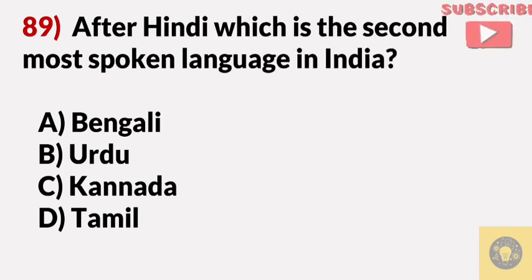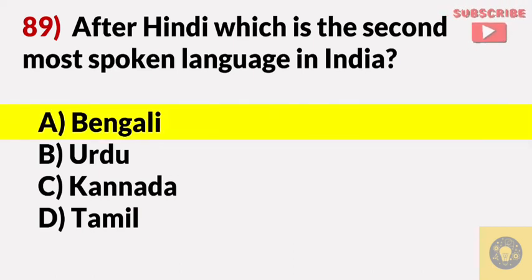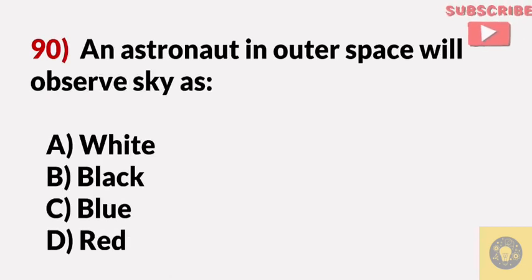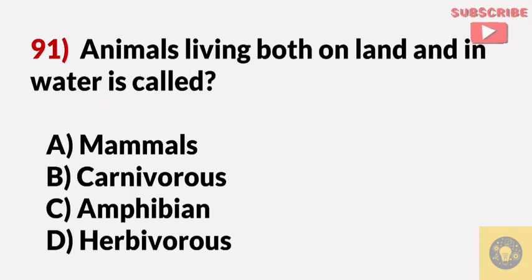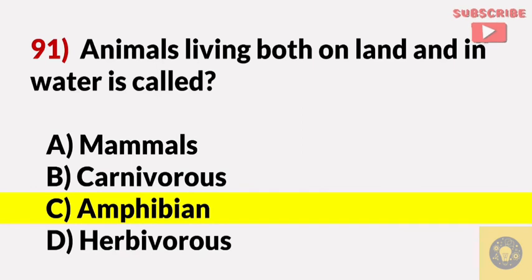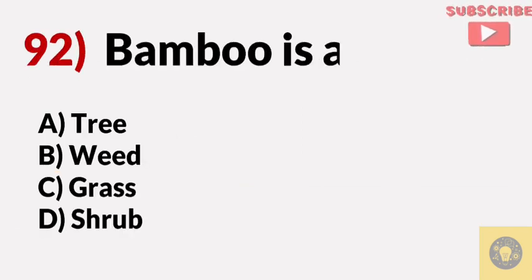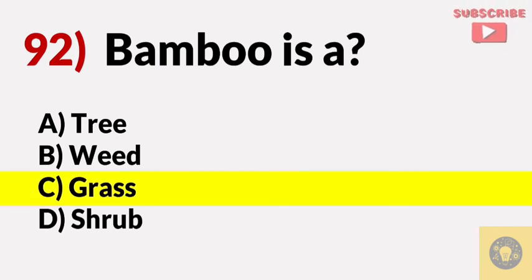After Hindi, which is the second most spoken language in India? Answer A, Bengali. An astronaut in outer space will observe the sky as? Answer B, black. Animals living both on land and in water are called? Answer C, amphibians. Bamboo is a? Answer C, grass.